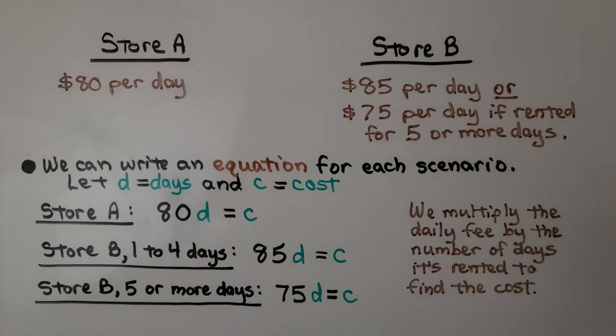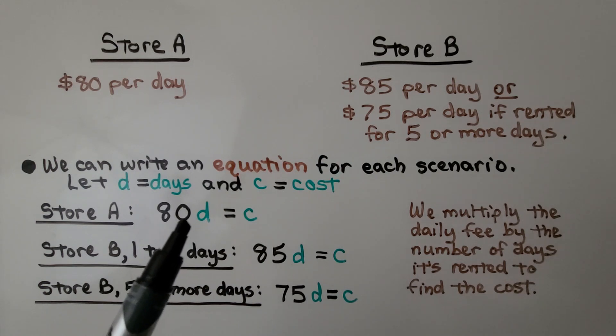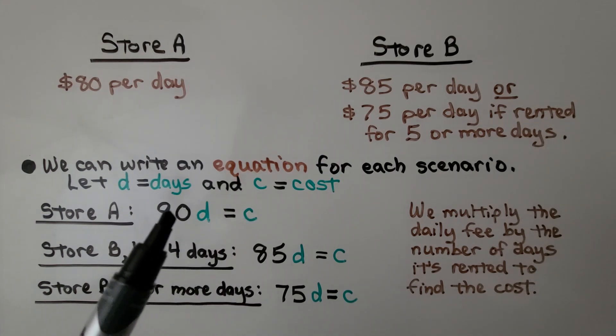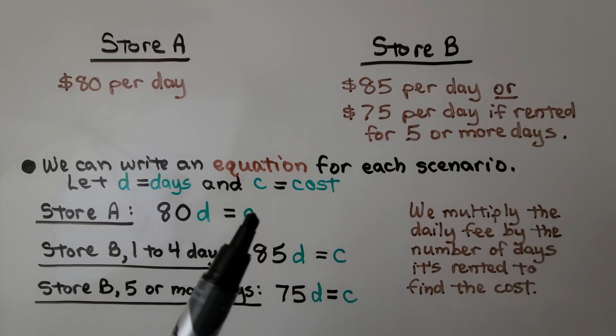So we can write an equation for each scenario. We're going to let D equal days and C equal cost. For store A, we don't know how many days he's going to rent it, so we don't know the cost. But we can write 80 times D for days is equal to the cost.